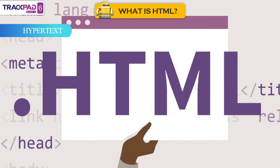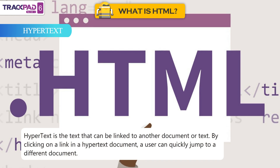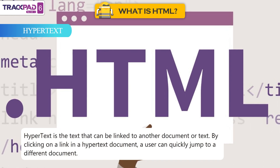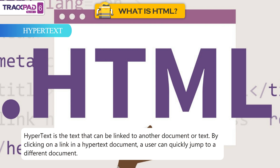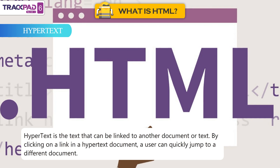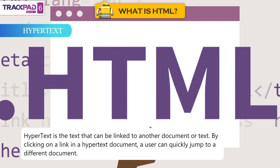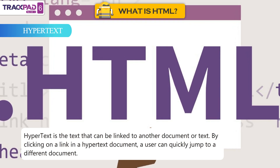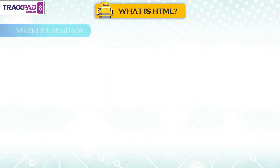Hypertext. Hypertext is the text that can be linked to another document or text. By clicking on a link in a hypertext document, a user can quickly jump to a different document.